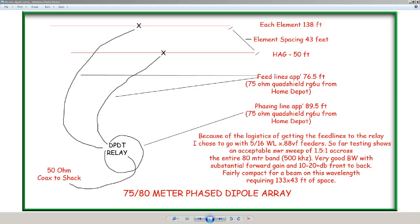Now front to back does suffer a little bit once you move off, out of the kill box. I kind of wanted it to be as good as I can get it in the 3.7 range, 3.75. The DX window is 3.79 to 3.8, and so I wanted it pretty good in that area. Seems to be working really well. So let's go over really quick what I've got here. Each element length is cut for 138 feet. The spacing is only 43 feet. It's not a wide spaced beam, so to speak. Height above ground is roughly 50 feet plus. Feed lines are 76.5 feet of 75 ohm quad shield RG6U from Home Depot.